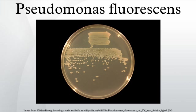The word Pseudomonas means "false unit," being derived from the Greek words pseudo and monas. The word was used early in the history of microbiology to refer to germs. The name fluorescens refers to the microbe's secretion of a soluble fluorescent pigment called pyoverdine, which is a type of siderophore.